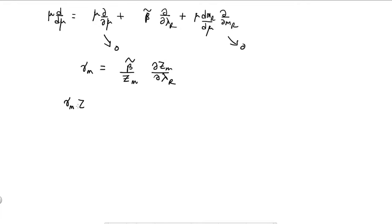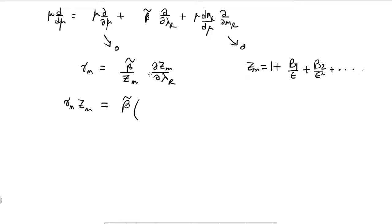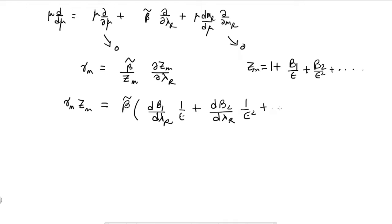I will write gamma_m times zm equals beta tilde times — recall zm was written as 1 plus b1 over epsilon plus b2 over epsilon squared and so forth, collecting all single pole, double pole terms, et cetera. When I take the derivative, the 1 goes away and it gives dv1 over d_lambda_r times 1 over epsilon, plus dv2 over d_lambda_r times 1 over epsilon squared, and higher-order terms.